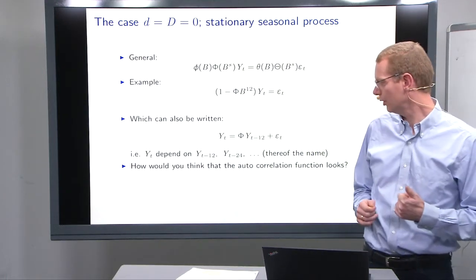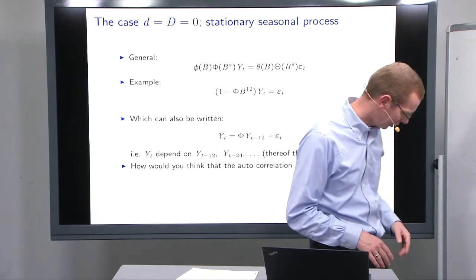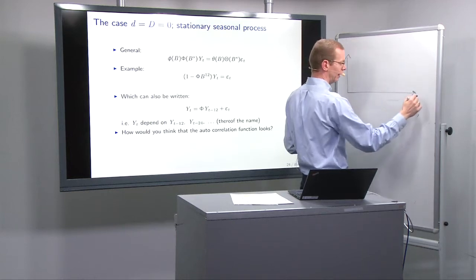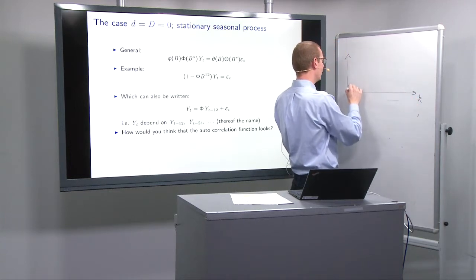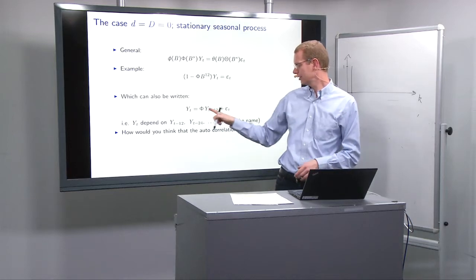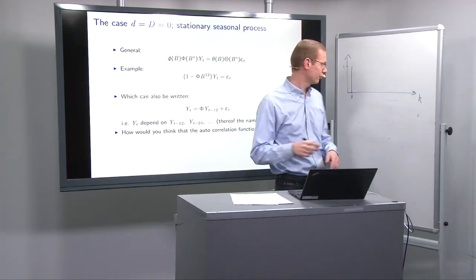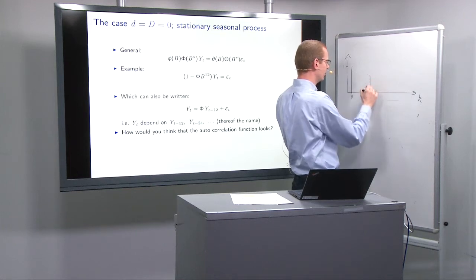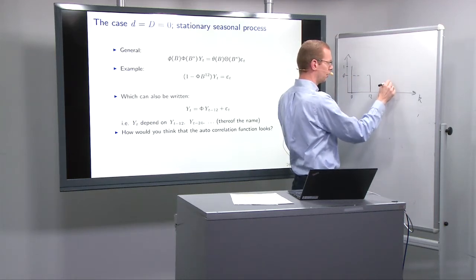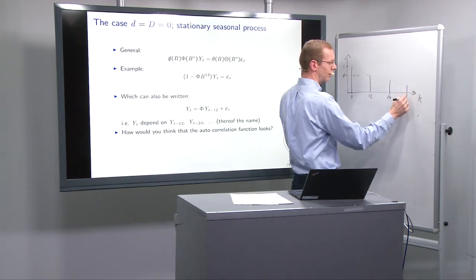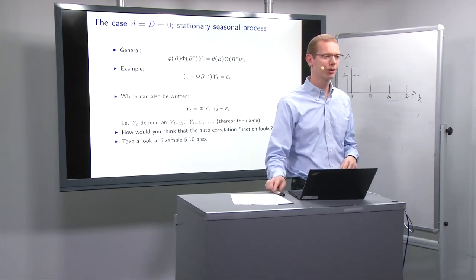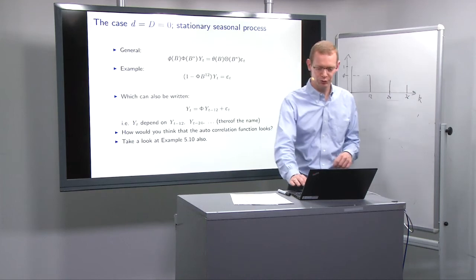So, the autocorrelation function for this one here, how would that look like? Well, basically, what we have, if we have the lags k out here, then in lag 0, we get up to 1 per definition. Then, there's nothing, no correlation, no dependence on lag 1. We have to go all the way to lag 12. So, you have to go out here somewhere to go to lag 12. And this is phi. Then, you go to lag 24. You get phi squared. 36, you get phi cubed. And so, forth all the way to infinity. And if you have a look at example 5.10, if you want to look into more of these.